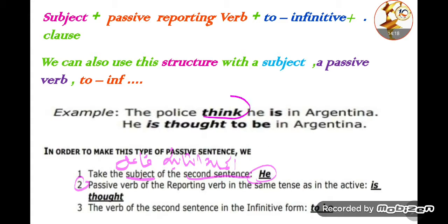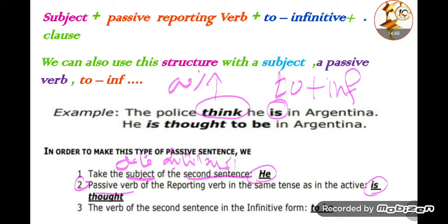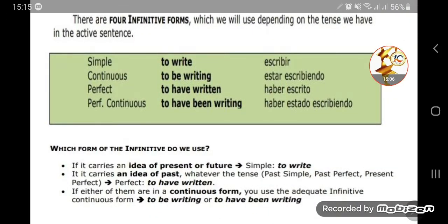We put 'is thought' because the reporting verb tense follows the tense used in the active. Then the verb of the second sentence is put in the infinitive form — 'to + infinitive'. So it becomes 'to be' because 'is' in its base form is 'be'. We need to memorize this table of infinitive forms.